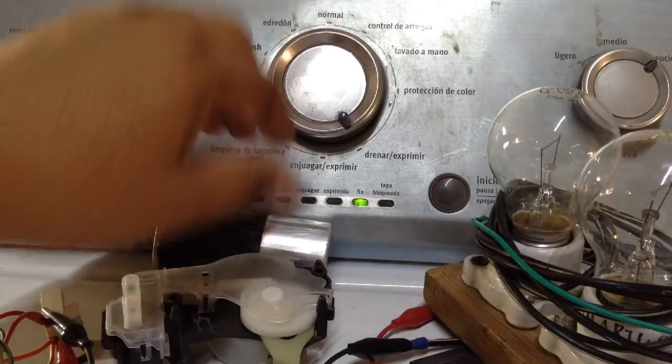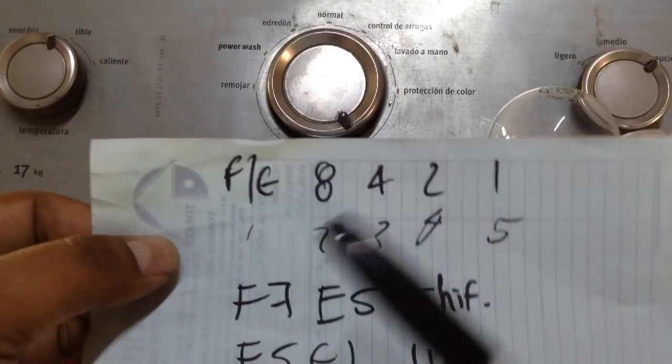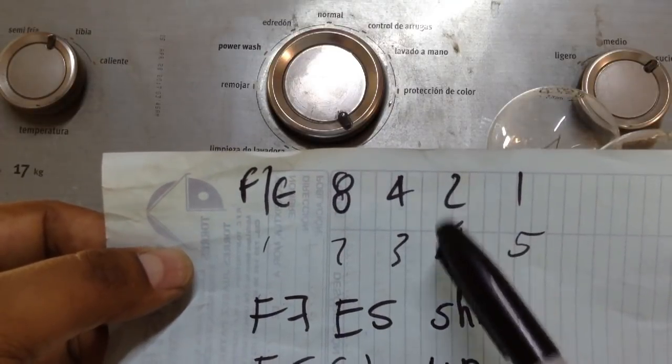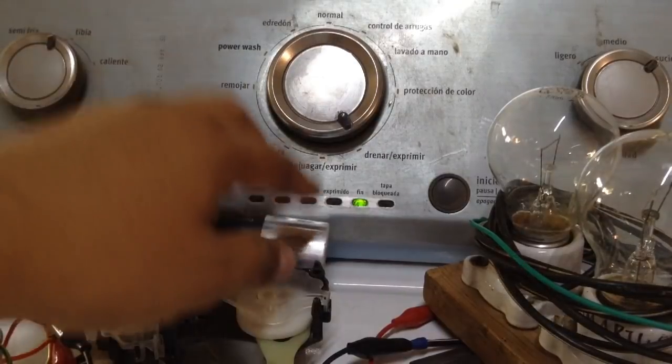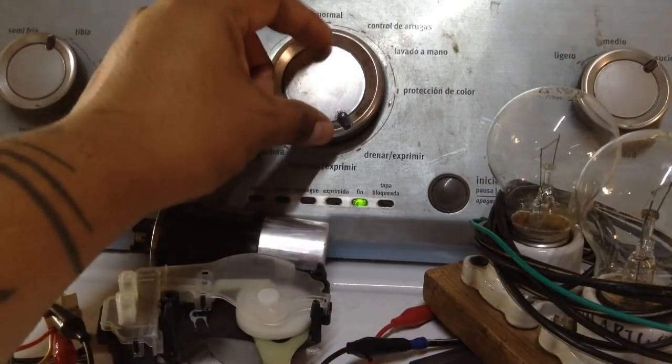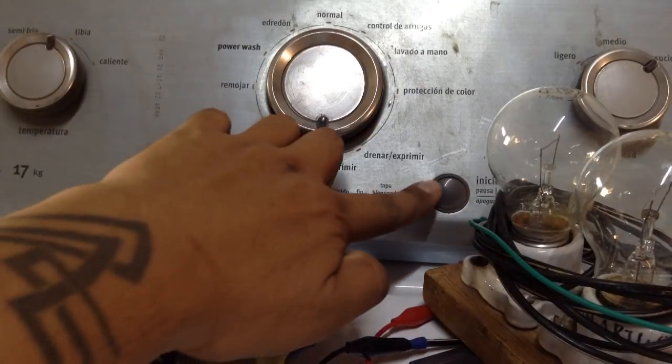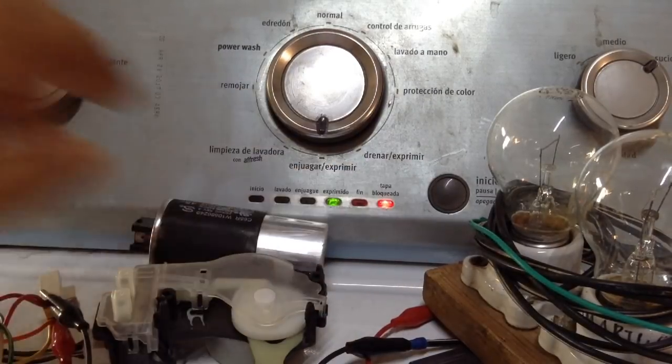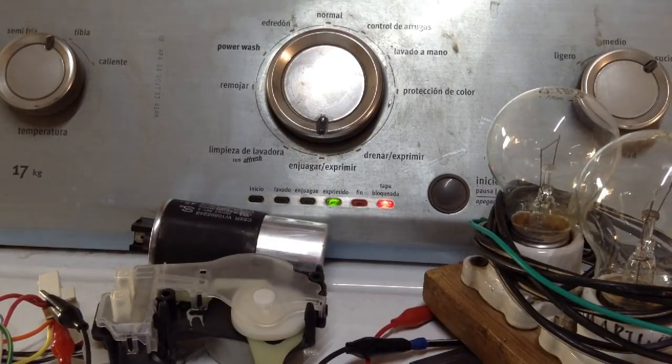Para la prueba automática vamos a ingresar en el menú número 2. Cuando ustedes ven su hojita, ¿dónde está el 2? Tiene que encender el segundo LED de derecha a izquierda. Una vez que ha encendido el LED 2 vamos a dar inicio. Se activa el seguro de tapa. Eso es bueno, me indica que el seguro de tapa funciona.